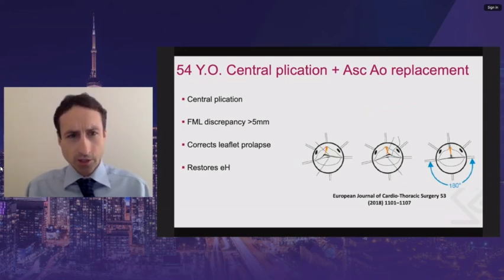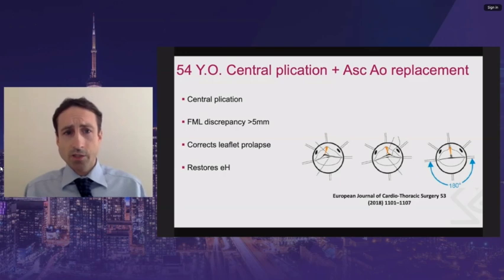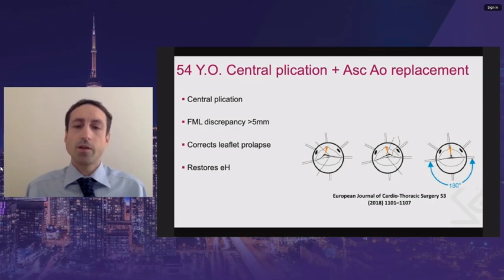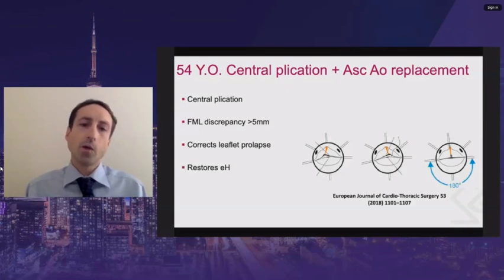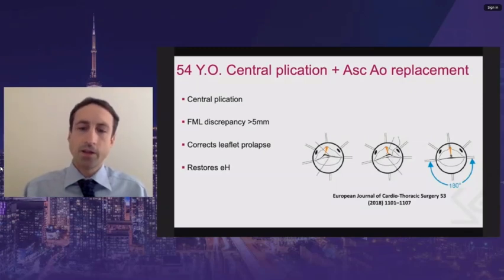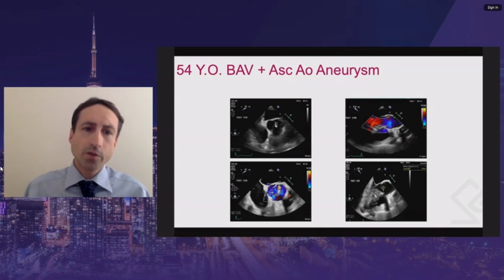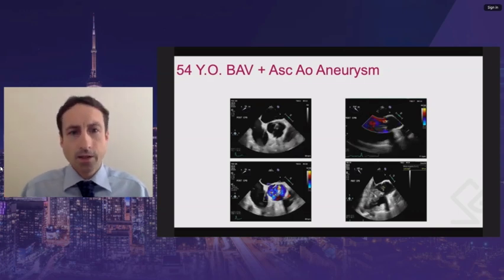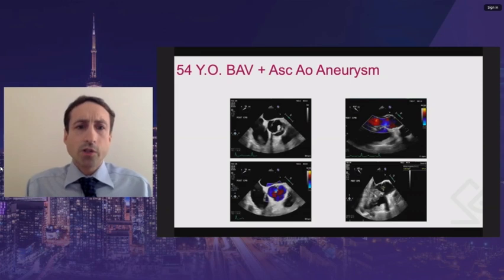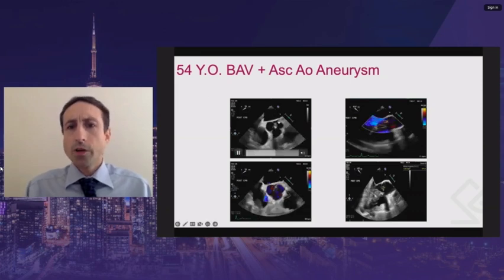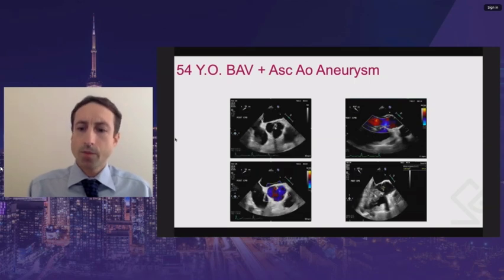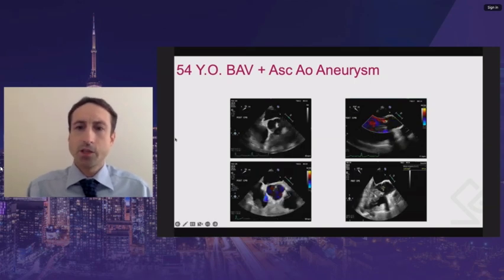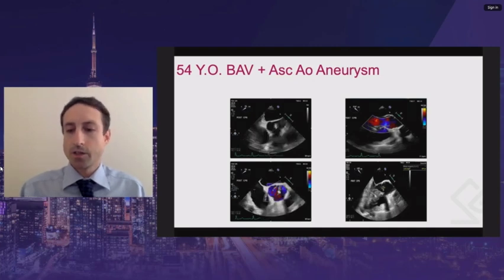This patient underwent central plication and ascending aorta replacement. Central plication is often used when the free margin length discrepancy is greater than 5 millimeters; it corrects leaflet prolapse, reducing aortic regurgitation, and restores the effective height — the height at which the free margin of the leaflet coapts above the plane of the annulus. Following repair, we can see the cusps are now closer to 180 degrees, there is no significant aortic regurgitation, and the coaptation and effective height both suggest a prolonged duration of repair.